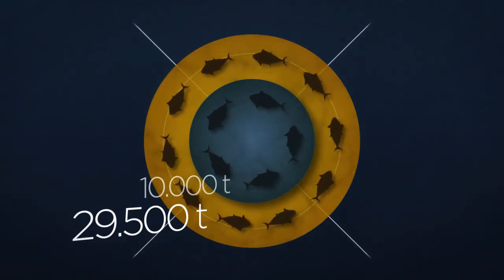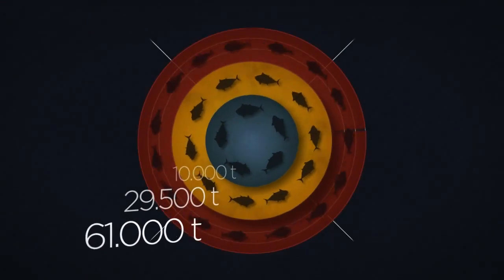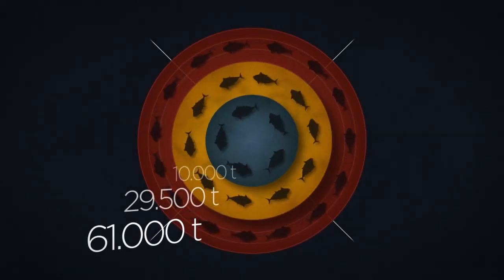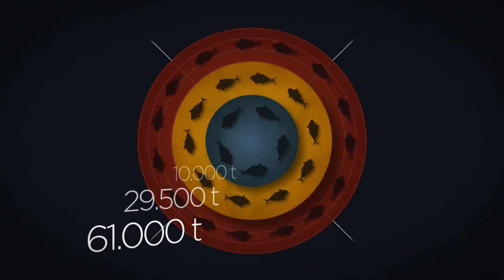Then, despite this already inflated limit, 61,000 tons of bluefin tuna were caught. That is six times more than the recommended limit.